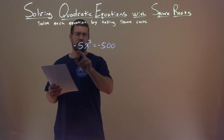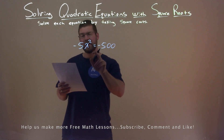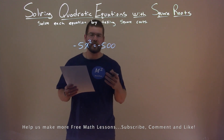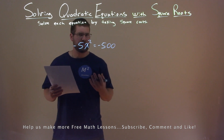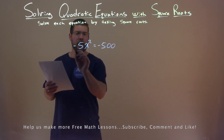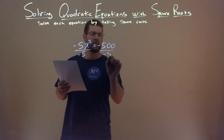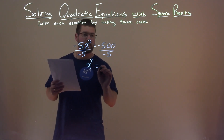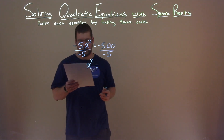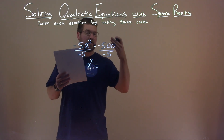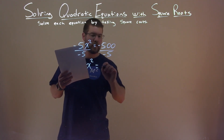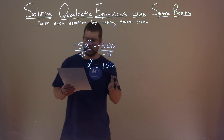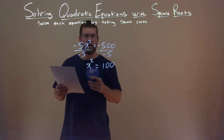We're given this problem: negative 5x squared equals negative 500, and we want to solve this equation by taking the square root. First, I have to get x squared by itself, so I divide both sides by negative 5. Negative 5 cancels, leaving x squared. Negative 500 divided by negative 5 — negative divided by negative is positive — gives us positive 100. So we have x squared equals 100.